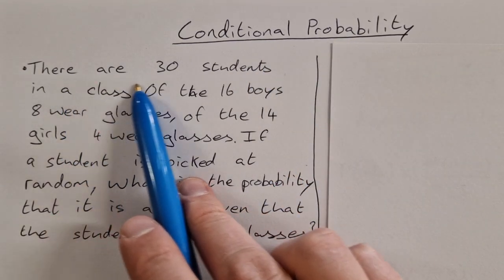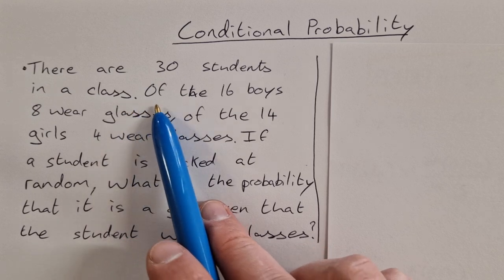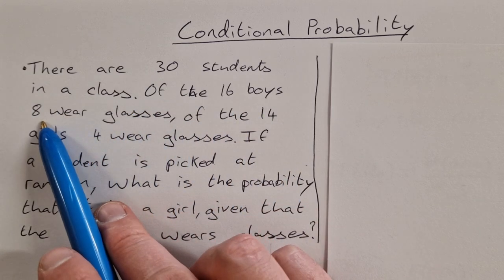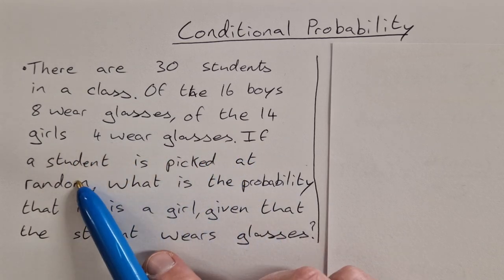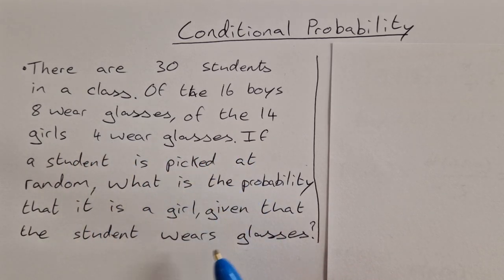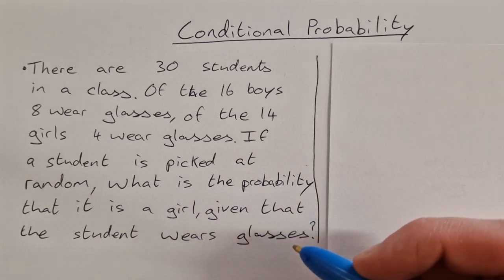So the question is, there are 30 students in a class. Of the 16 boys, 8 wear glasses, and of the 14 girls, 4 wear glasses. If a student is picked at random, what is the probability that it is a girl, given that the student wears glasses?